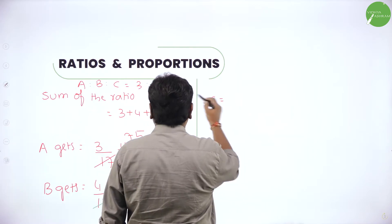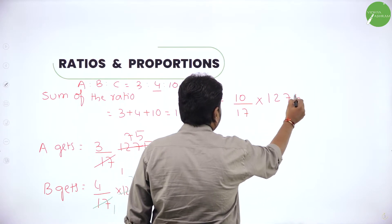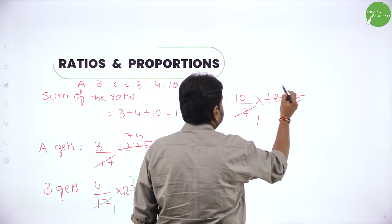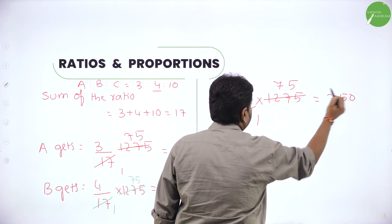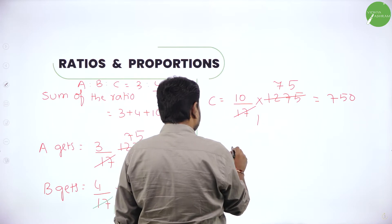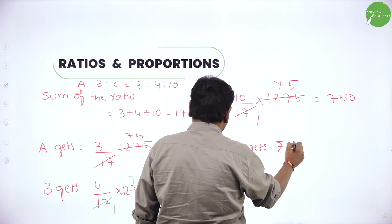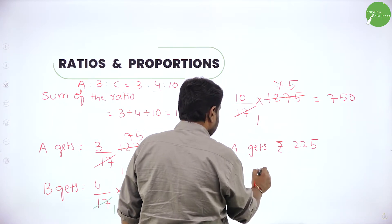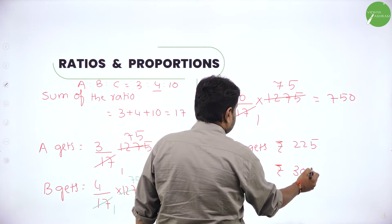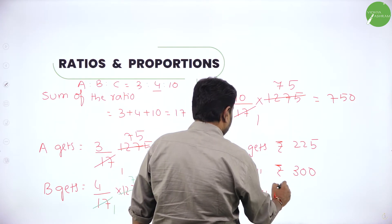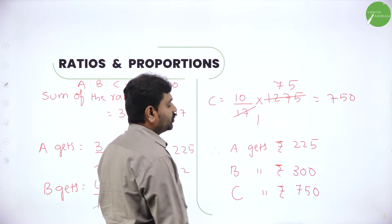And C gets — ratio of C is 10 by sum of the ratio, 17, into 1,275. Simplify: 17 ones are 17, 7 is a, 5 is a — 75. Then 750. So therefore: A gets ₹225, B gets ₹300, and C gets ₹750. If you add all, you will get 1,275.